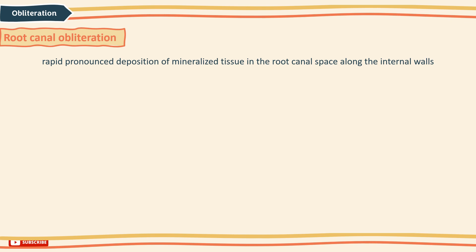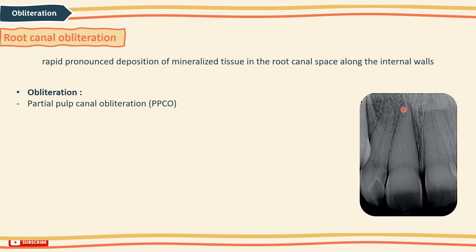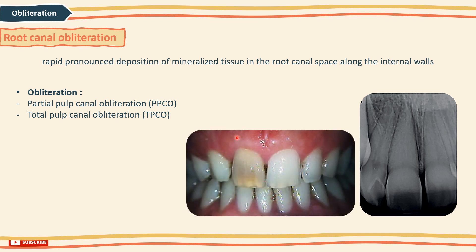Calcific metamorphosis, or pulp canal obliteration, is the pulp's response to trauma, characterized by rapid pronounced deposition of mineralized tissue in the root canal space along the internal walls, filling most of the pulp system and leaving it narrowed and restricted. It can be classified as partial or total pulp canal obliteration. Affected teeth usually present with yellowish or greyish discoloration, occurring in 6 to 35% of luxation injuries. Prophylactic endodontic treatment is not necessary as pulp necrosis occurs in only 13 to 16% of cases. A high success rate, up to 80%, has been reported for subsequent root canal treatment despite a hairline narrow or no root canal detectable on x-ray.